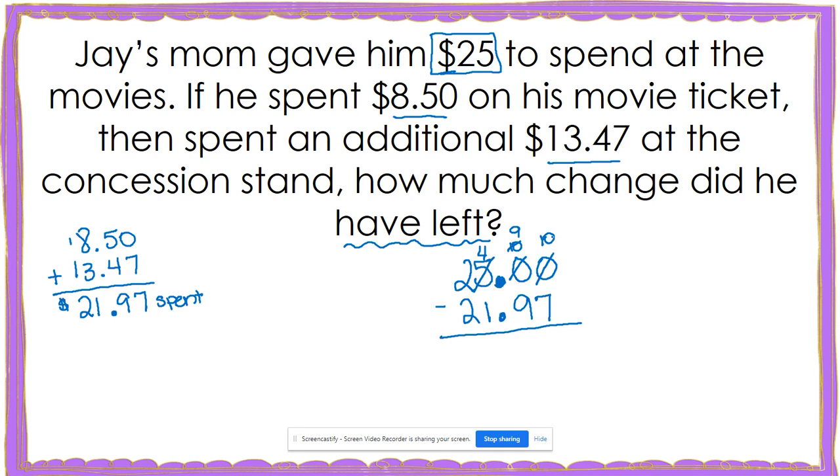Now I can subtract 10 minus seven to get three. Nine minus nine gives me zero. I'm going to bring down my decimal. Four minus one gives me three. And two minus two gives me zero. And I don't need that zero because zero three dot zero three is the same as $3.03. So Jay had $3.03 left.